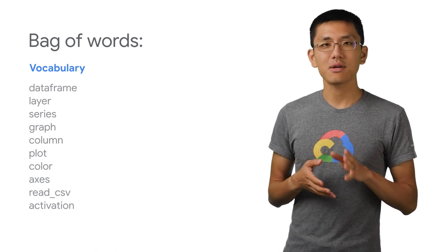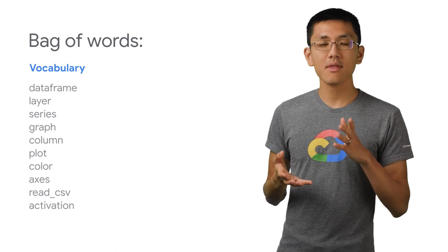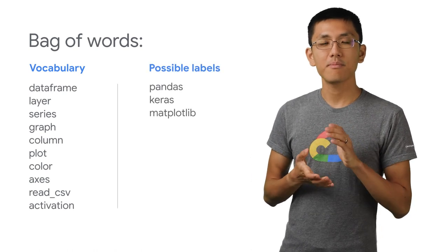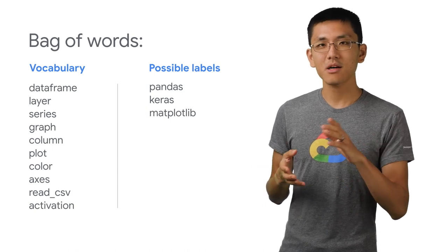And so we want to be able to identify, given some arbitrary text, whether a topic is about pandas, keras, or matplotlib. So how might we do that?